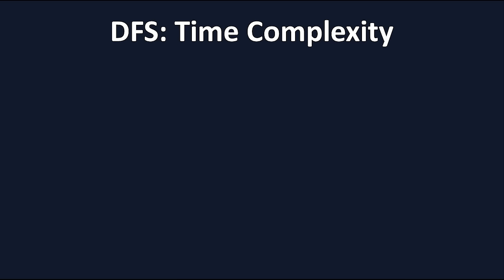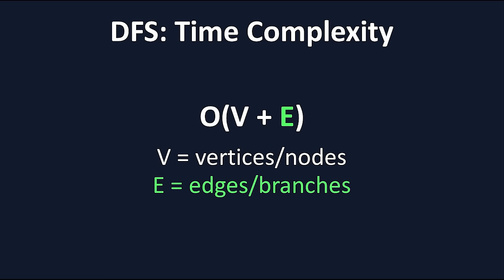The time complexity for this algorithm is given a notation of O of V plus E, where V represents total nodes, aka vertices, and E represents total branches, aka edges. We'll explore the why behind this a bit more in a video dedicated solely to depth first search, but for now all you need to know is that the runtime is big O of V plus E. Now let's move on to DFS's counterpart.